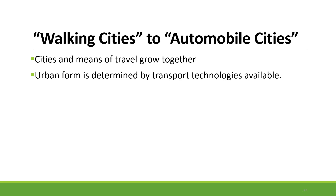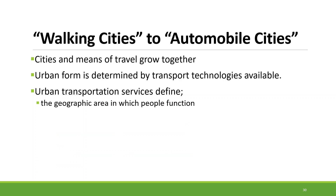City sizes grew as the means of travel developed — from horse cart to bicycles to cars. When we got a new mode of transport, the city grew from a walkable city to an automobile city. Urban form was predominantly influenced by the transport technologies available at a particular time. Urban transportation was defined by how many people could access transportation services, allowing them to move within the city or to the outskirts where land is usually cheaper.